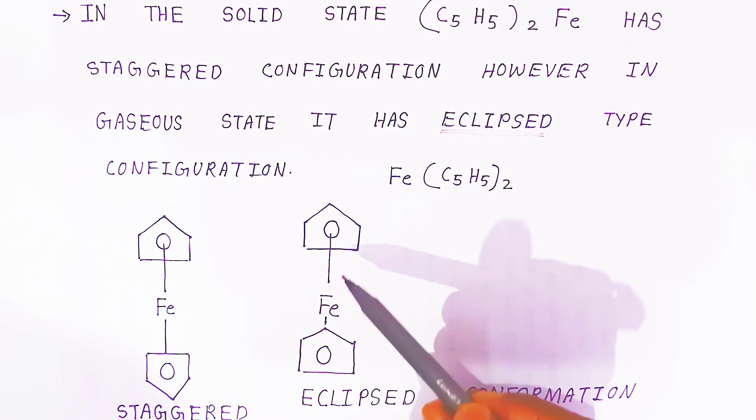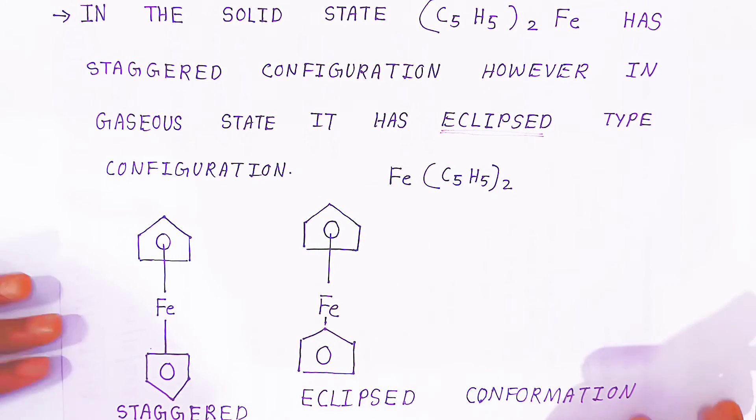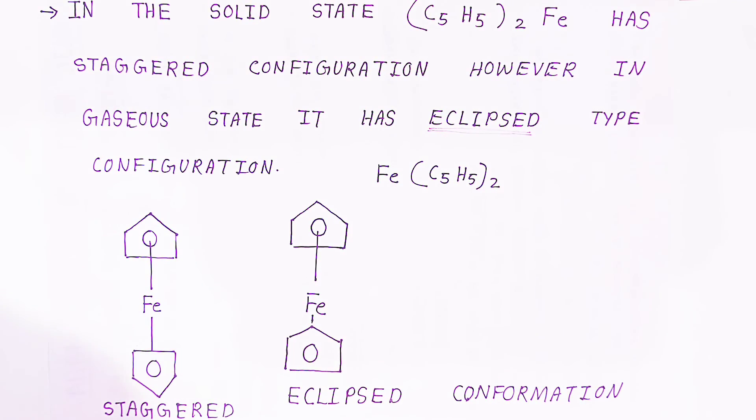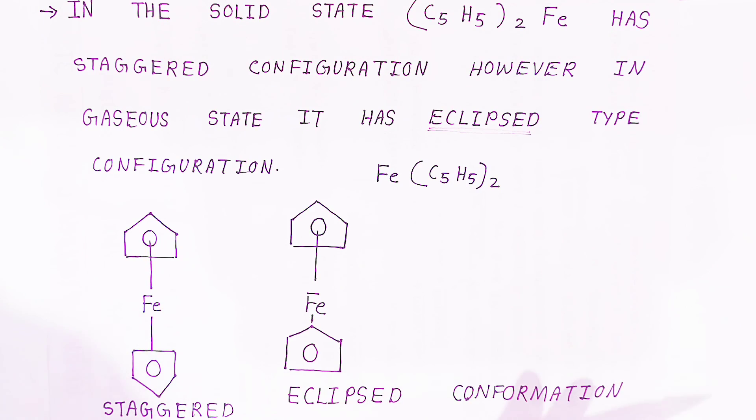This is called eclipsed - you will get more strain between carbon and carbon. This is the staggered conformation and this is eclipsed conformation. This is the structure of ferrocene. If you like my video, please share it, subscribe it. Thank you very much.